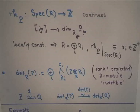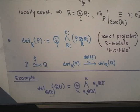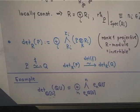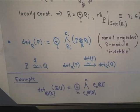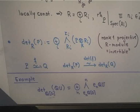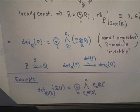Once I have this stratification, I can consider the determinant over R of this projective module, which is the direct sum over all i of the N_i-th exterior power over R_i of P ⊗_R R_i. At each i I take the top exterior power, giving a rank-one projective module over R_i. Overall, when I take the direct sum I get a rank-one projective module over R — the determinant, also called the invertible module.